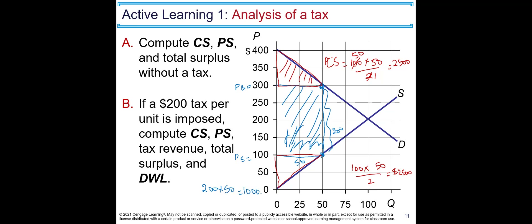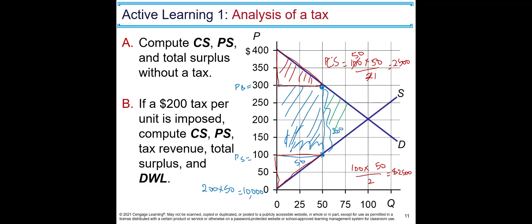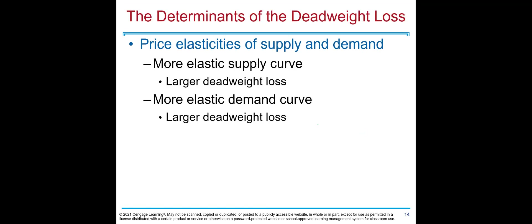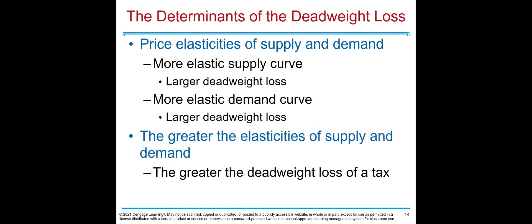The tax revenue collected by the government is the rectangular area: $200 times 50 equals $10,000. The deadweight loss is the two triangular areas lost: base 200 times height 50 divided by 2 equals $5,000. Summary: consumer surplus $2,500, producer surplus $2,500, government tax revenue $10,000, deadweight loss $5,000.